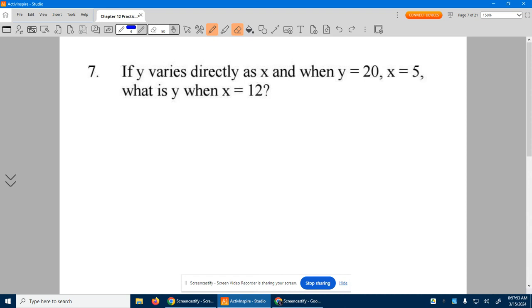All right, number seven. If y varies directly as x, so that tells us y is equal to—we have this constant out here—times x.